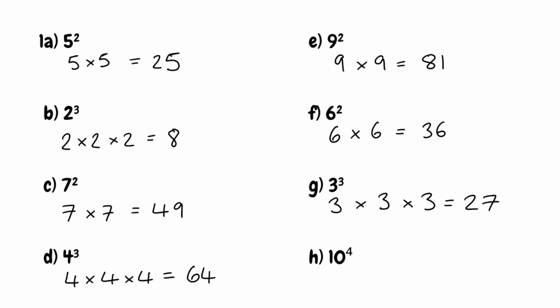For part h, we've got 10 to the power of 4. We're taking the base of 10 and multiplying it by itself 4 times. 10 times 10 is 100, times by 10 again is 1,000, and multiplying that by 10 again gives us a final answer of 10,000. A useful trick with powers of 10 is that the power is also the number of zeros that appear in the answer — so 10 to the power of 4 is 10,000.